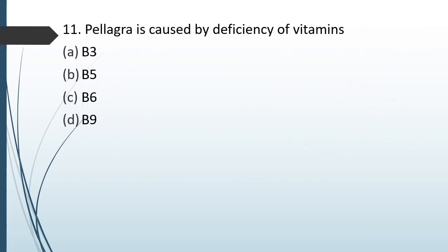Question No. 89: Pellagra is caused by deficiency of Vitamin B3, B5, B6, or B9. The correct answer is Option A — it is caused by deficiency of Vitamin B3.